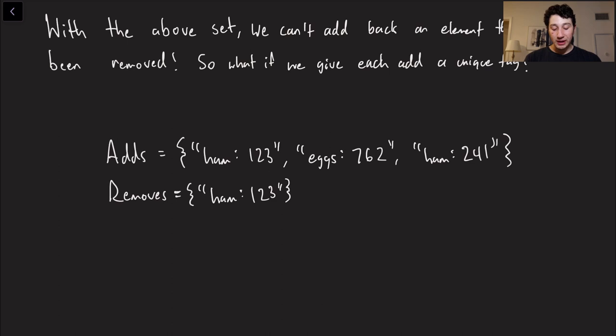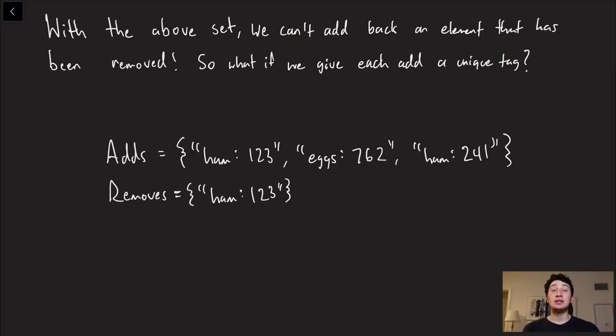Well, one way that would be pretty cool is you basically just pick a random tag with every single addition to the set that you do. So now in your add set, we've got a ham with an add identifier of 1,2,3, eggs with an add identifier of 7,6,2, and let's say some other leader wanted to add ham again. Now the add identifier might be 2,4,1.